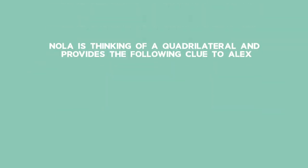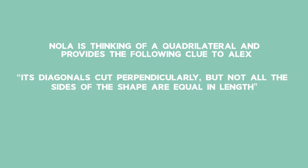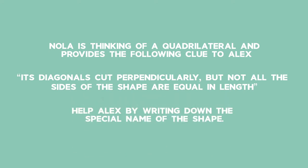Nola is thinking of a quadrilateral and provides the following clue to Alex: Its diagonals cut perpendicularly, but not all the sides of the shape are equal in length. Help Alex by writing down the special name of the shape.